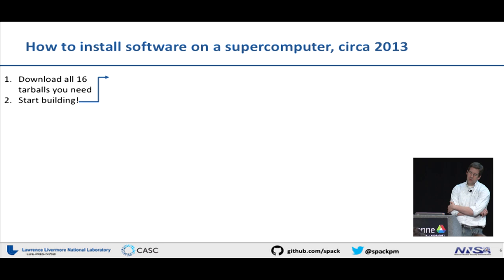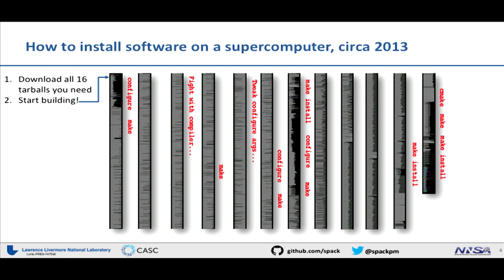So this is what that looked like: you go configure, you go make, you fight with the compiler, make, tweak, configure some more, go do CMake, do GMake. Finally, once that's done, you say 'oh good, I got this thing to link,' you run the code — and then it segfaults. And you start over. This is not an ideal process.